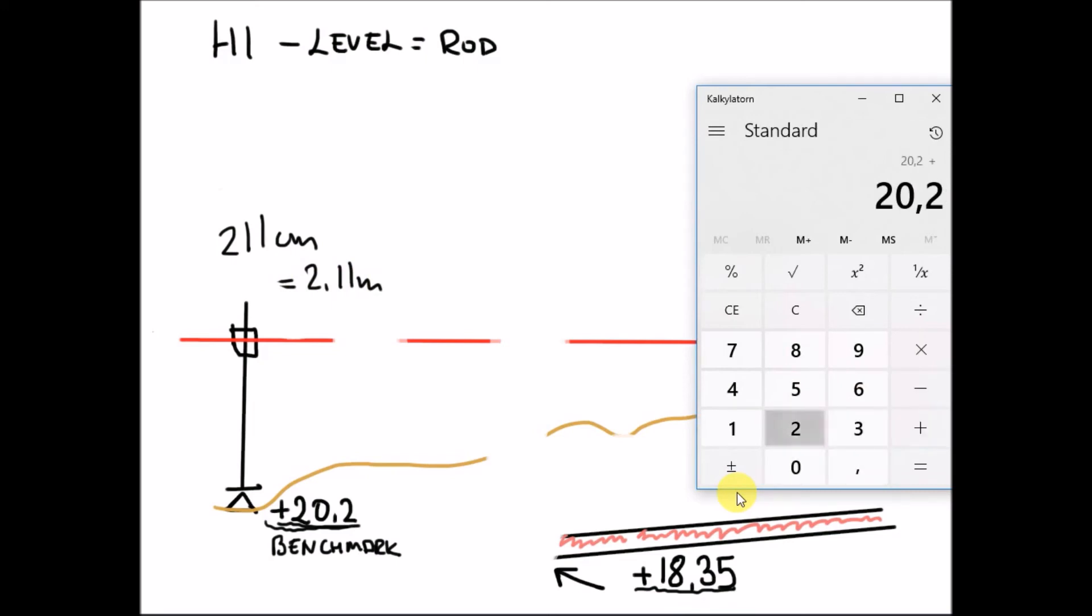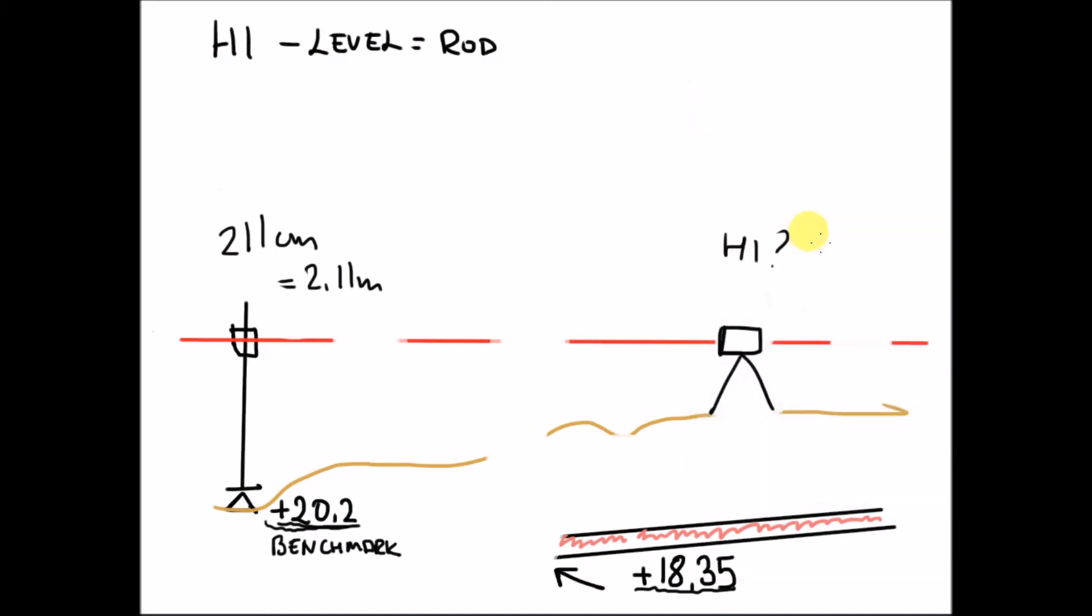Save this in your calculator. If you have something in your memory, clear that. Otherwise press M plus. Write this result up in your book. Write a date, time, datum that you used, reading, and HI.